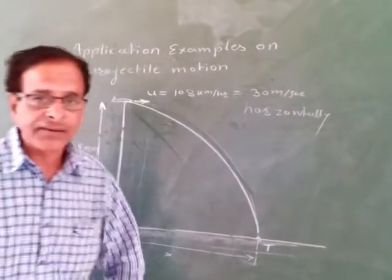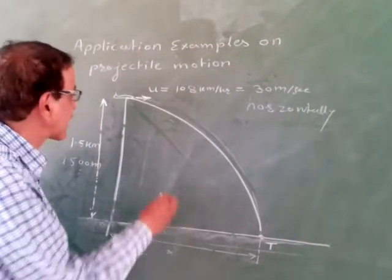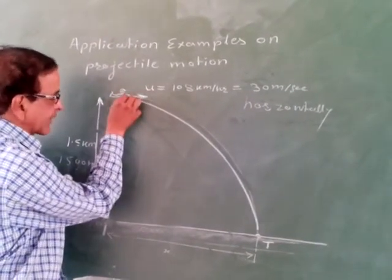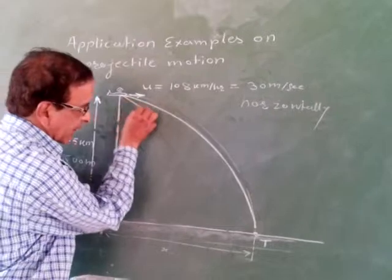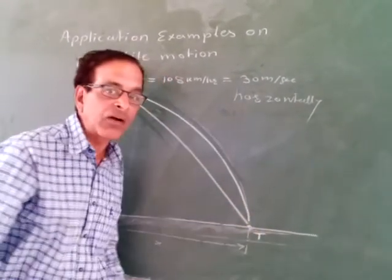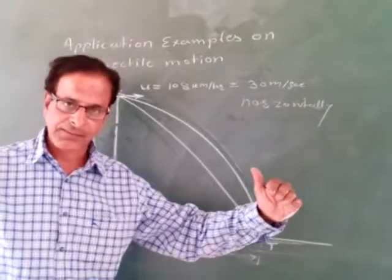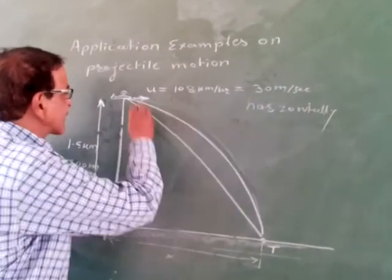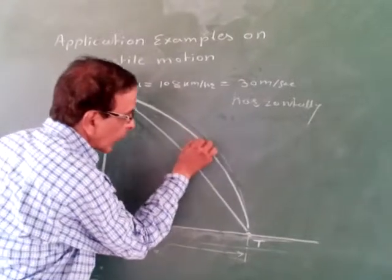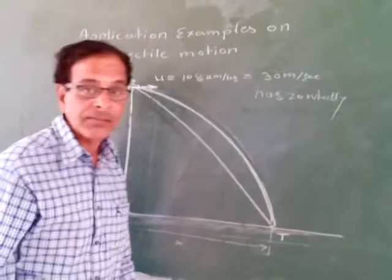The question is: at what angle did the pilot glance at the target? The glance will be a straight line, whereas the bomb, once released, follows a parabolic path — that is, projectile motion.